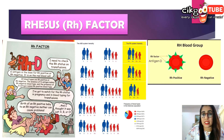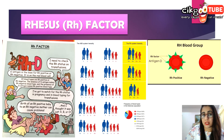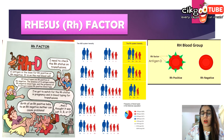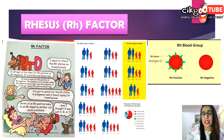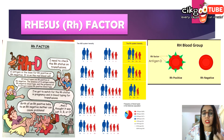Rh negative individuals will develop the anti-D antibody only when exposed to Rh positive blood. For blood donation, Rh positive can receive from Rh negative, but Rh negative cannot receive from Rh positive. If Rh positive blood with antigen D enters the body of an Rh negative recipient, the body will produce a matching anti-D antibody. The first time this happens there are no noticeable effects, but a second exposure causes agglutination and hemolysis.